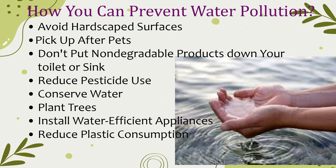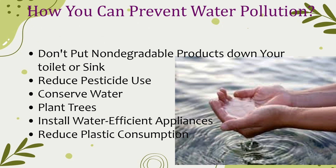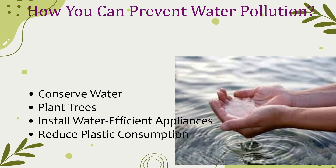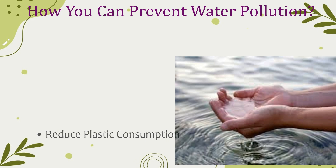How can we prevent water pollution? By avoiding hard-scaped surfaces, picking up after pets, not putting non-degradable products down your toilet or sink, reducing pesticide use, conserving water, planting trees, installing water-efficient appliances, and reducing plastic consumption.